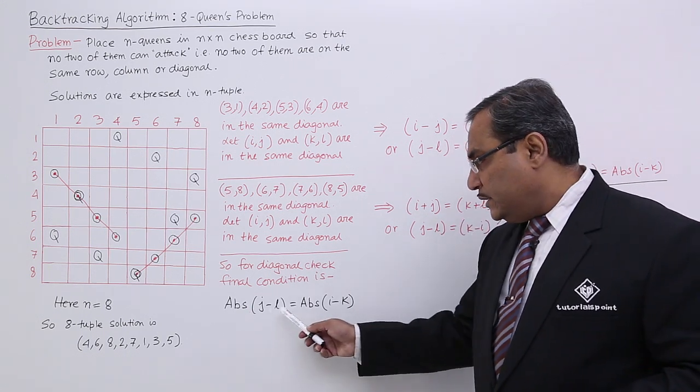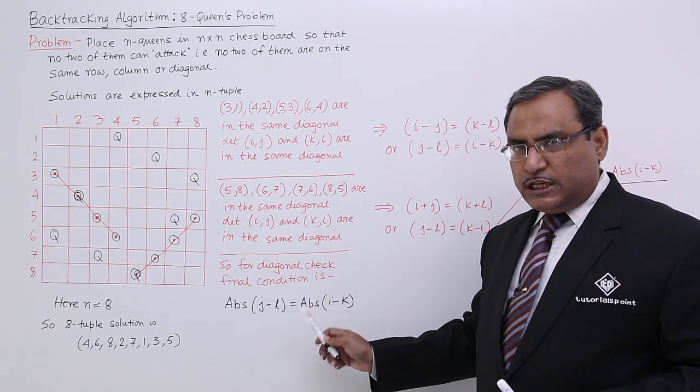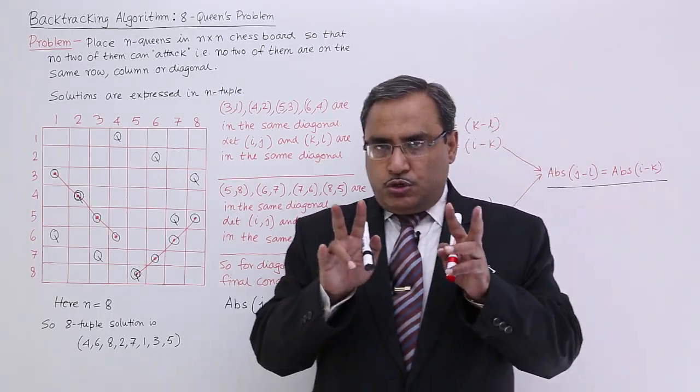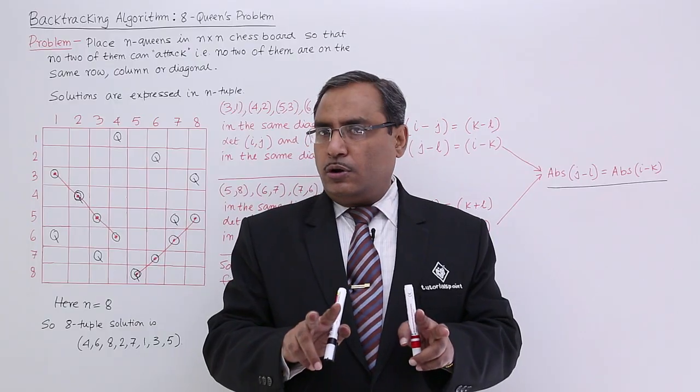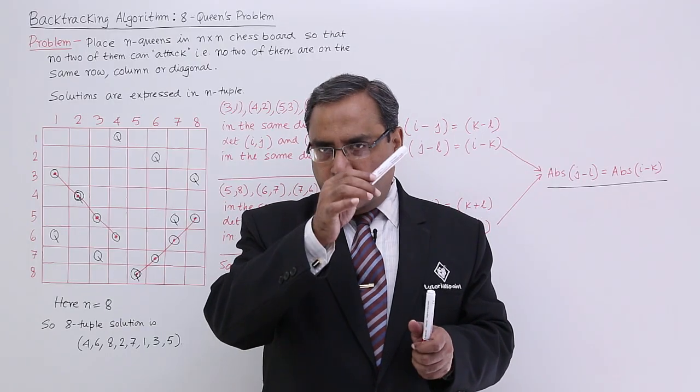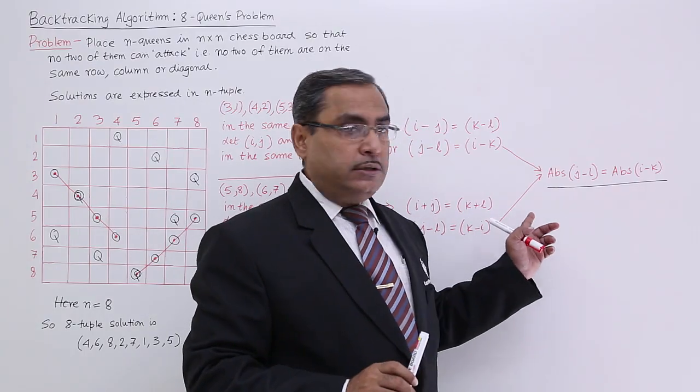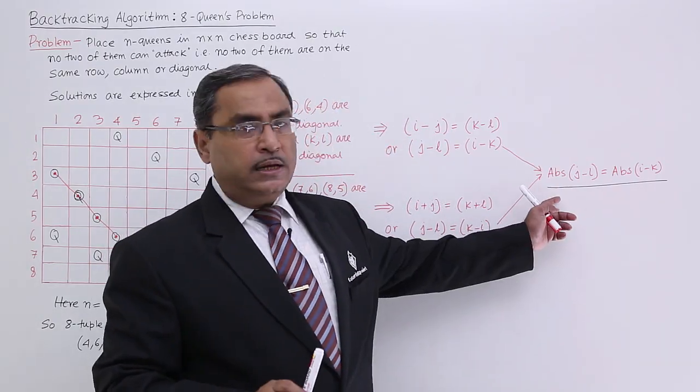In our algorithm I shall be using this particular equation, this particular formula to check whether two cells are in the same diagonal or not. It is immaterial whether diagonal is like this or diagonal is like this. I have combined both two conditions to get the generic form.